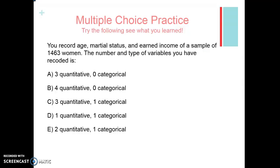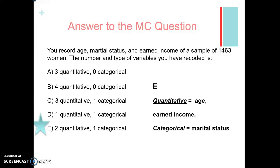Go ahead and try the next practice question — hit the pause button, try it, and then see how you do on the next slide. Hopefully you chose E. There are two quantitative variables: age, since you can find the average age, and income, since you can find the average earned income. Your categorical variable is marital status — whether you're married or not is a yes-or-no question; you're placing people into a bin or category. Think of categories like buckets — you're placing people into buckets.